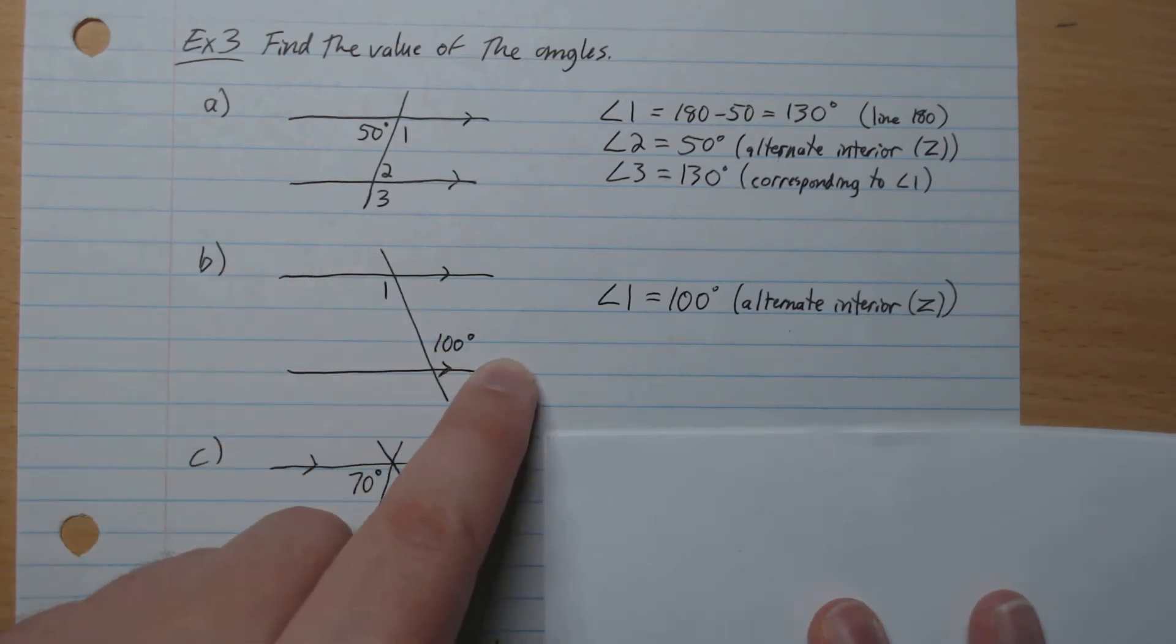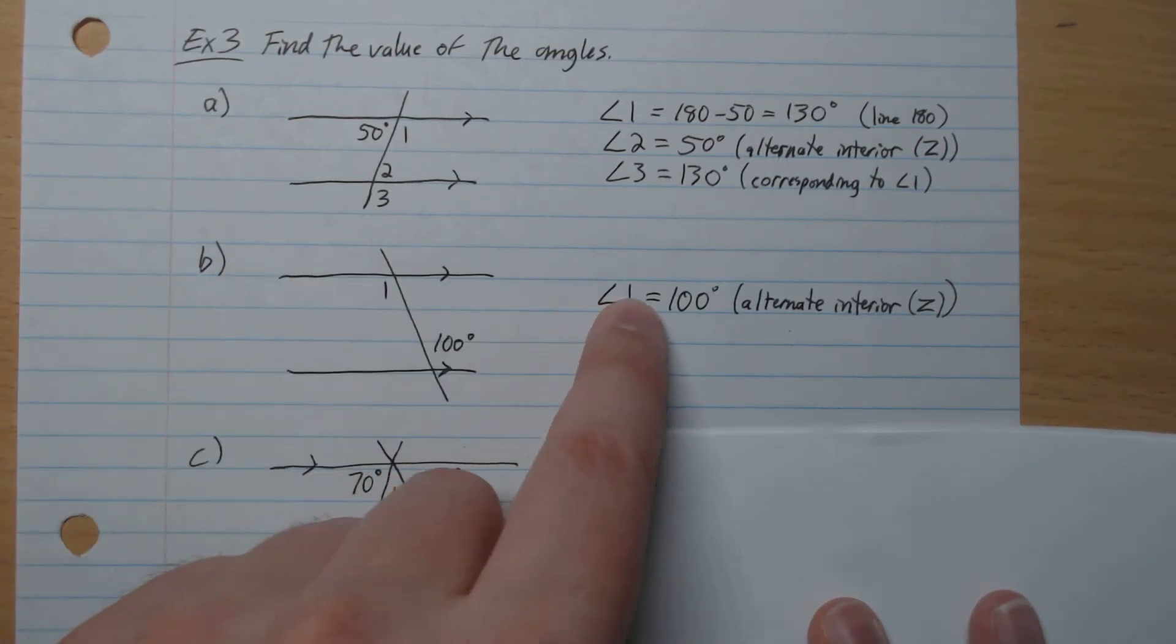Part B, here we have a nice little alternate interior. So 100, 100. Angle 1 is 100.